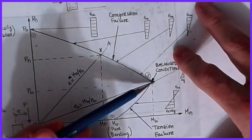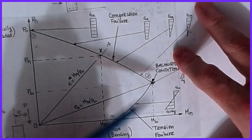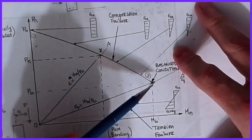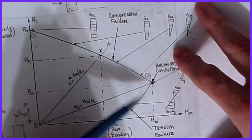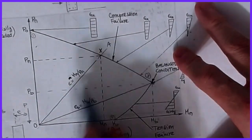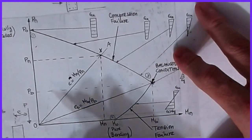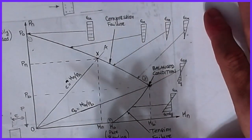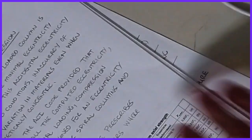This was our balance point where concrete and steel both fail at the same time, and then this was the pure flexure point down here. If you don't remember this or you're still a little confused, go back to our last video on interaction diagrams. Remember that the eccentricity lines go from zero out to the various points on this curve, and we can use those to make assumptions and calculate things.